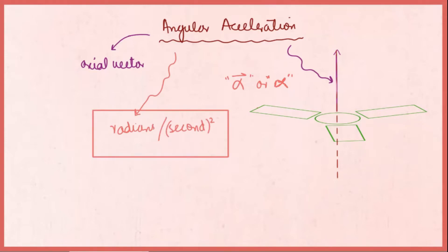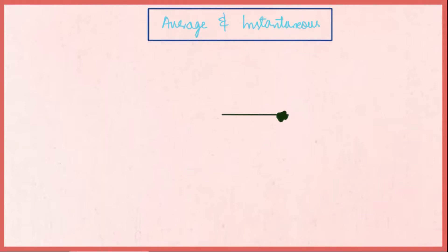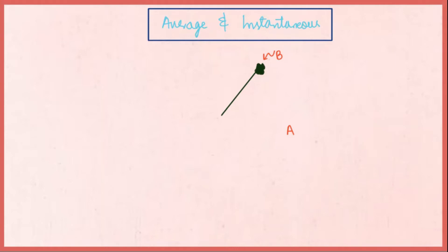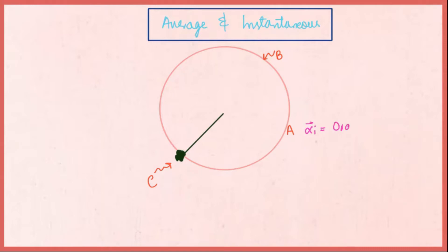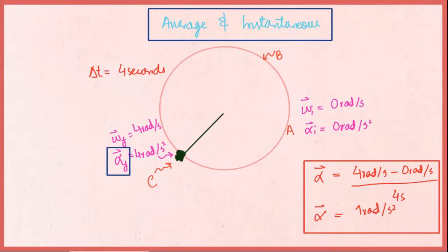Now let's discuss the difference between average and instantaneous angular acceleration. Suppose the angular velocity of a stone changes from point A to point B slowly, then from point B to point C quickly. The angular acceleration is 0 radians per second squared initially and 4 radians per second squared at the end. With initial and final angular velocities of 0 and 4 radians per second over 4 seconds, the calculated angular acceleration is 1 radian per second squared — averaged over time.